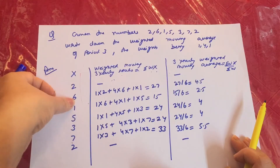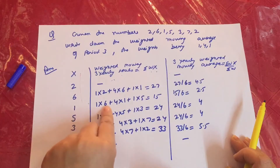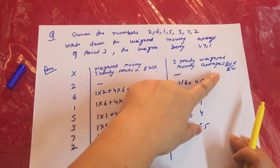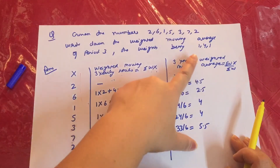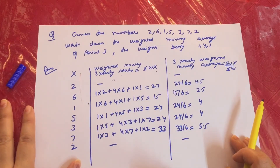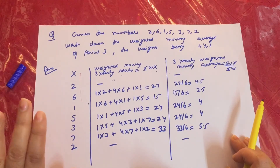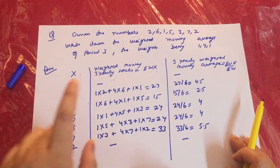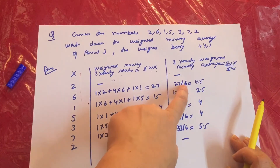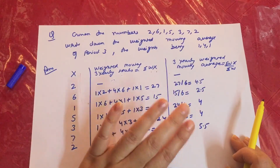Starting from that mid-value, grouping begins: A plus B plus C plus D plus E, then B plus C plus D plus E plus F, and so on. You skip the first 2 values at the top and automatically the same 2 are skipped at the bottom. The calculation remains summation W into X divided by summation W — multiply numerator by weights, divide by total weight, and those final values are your weighted moving average.